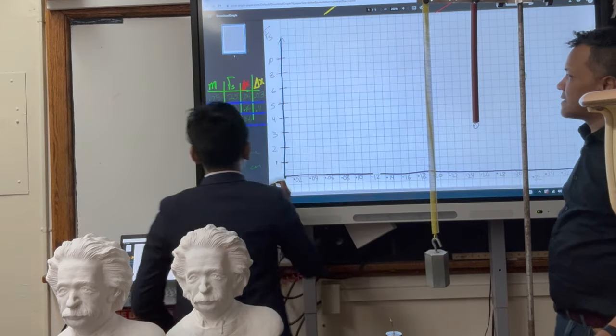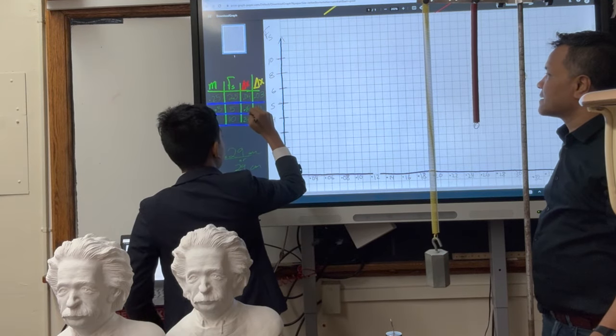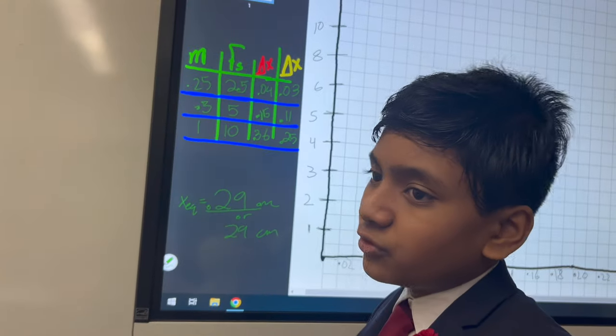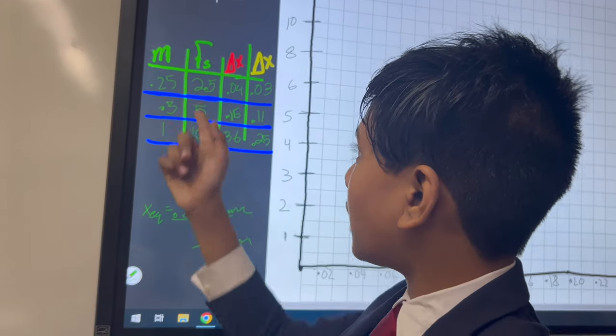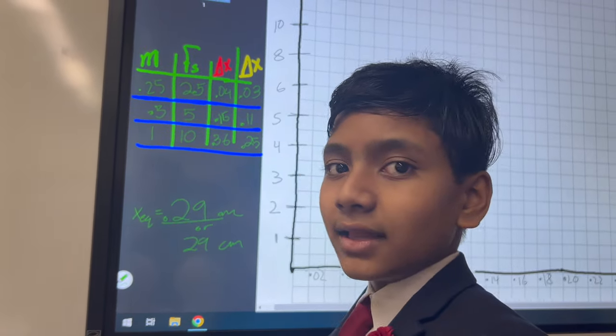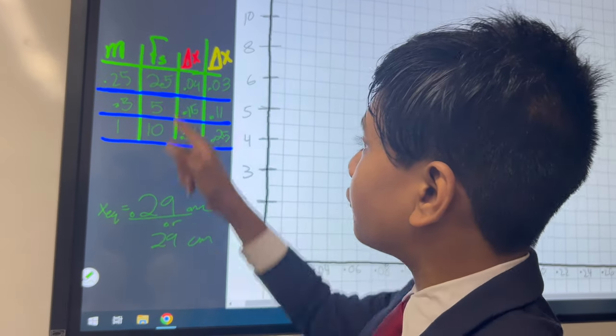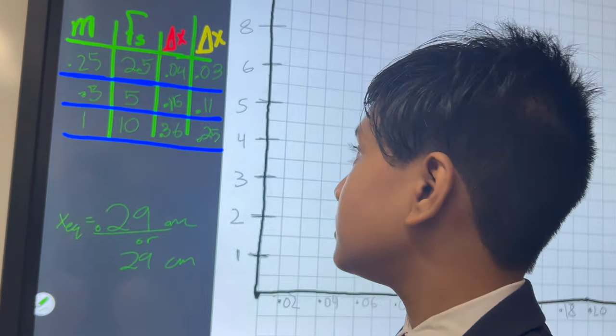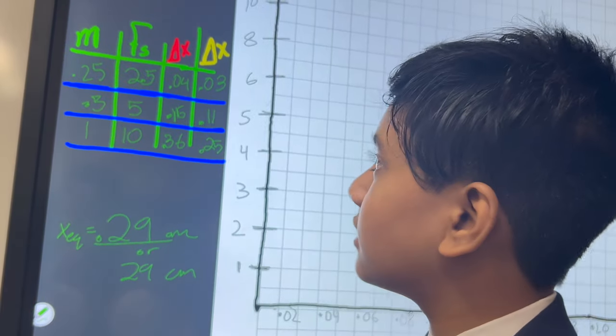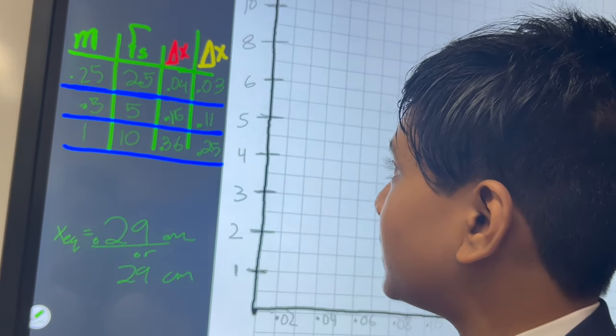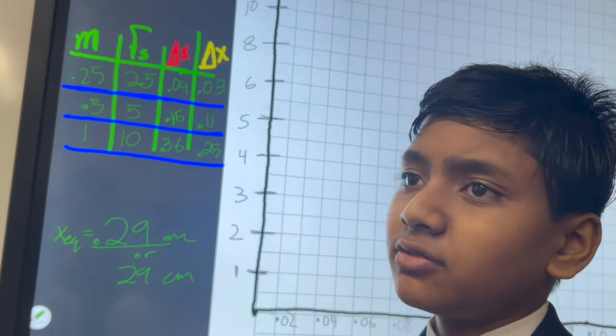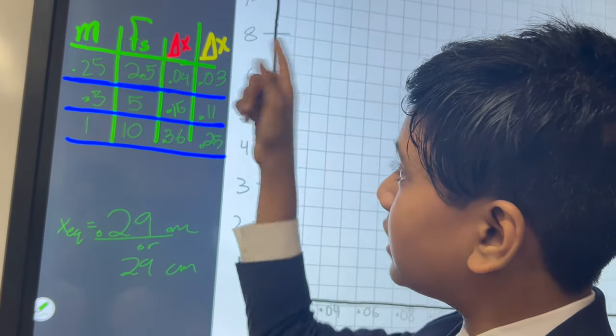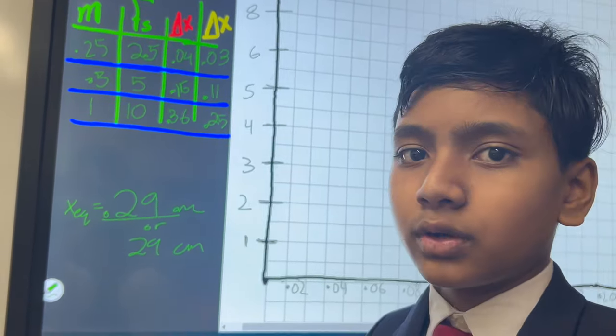54 minus 29 is 0.25. When the mass was 0.25 kilograms, which corresponded to a force of gravity and thus a retaliating force by the spring of 2.5 newtons. Restoring, not retaliating. Then the displacement of the red spring was 0.04 meters, and the displacement of the yellow-green spring was 0.03 meters.